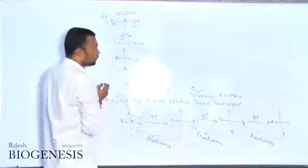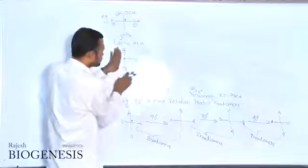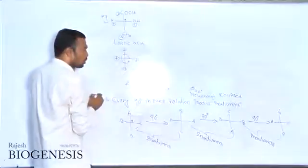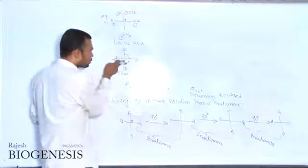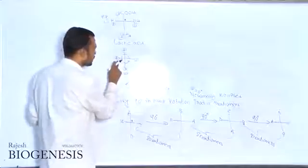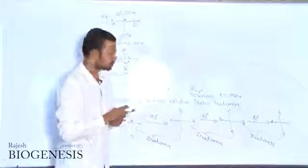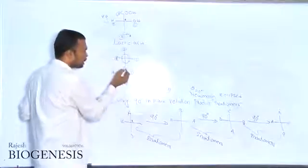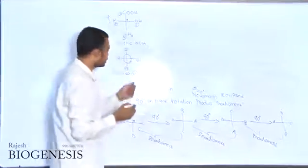After giving CIP priorities — 1, 2, 3, 4 — I close the least priority group which is present in the horizontal line. The direction 1→2→3 is anti-clockwise. Whenever the least priority group is in the horizontal line, the mode of rotation should be taken as opposite in direction. Anti-clockwise in this case means we assign R configuration. If the least priority group is in the vertical line, clockwise or anti-clockwise directly gives R or S respectively.